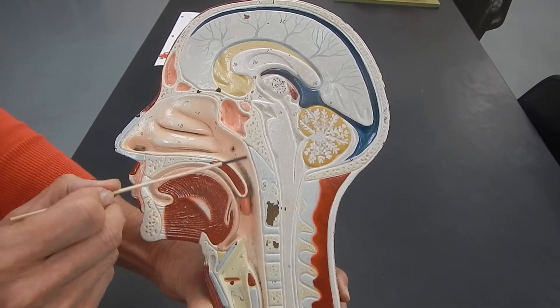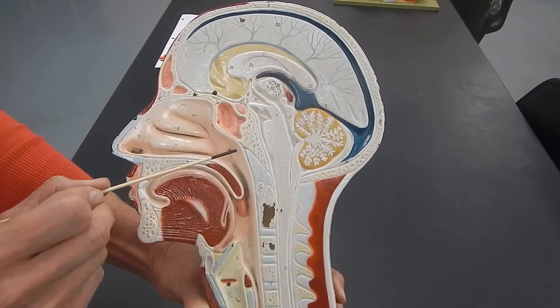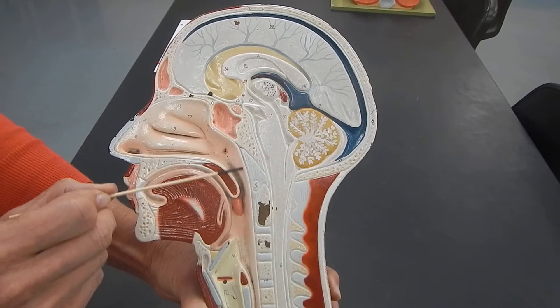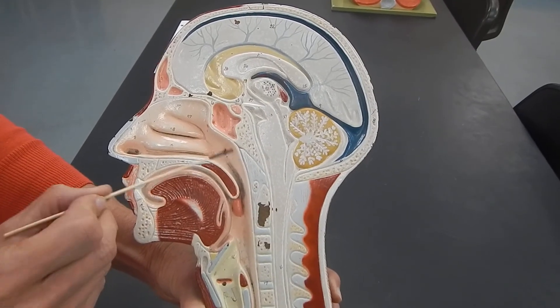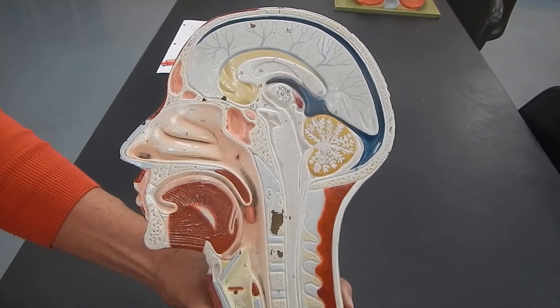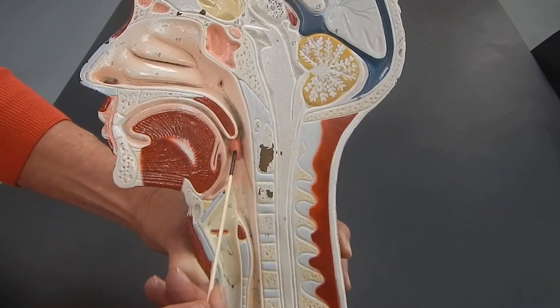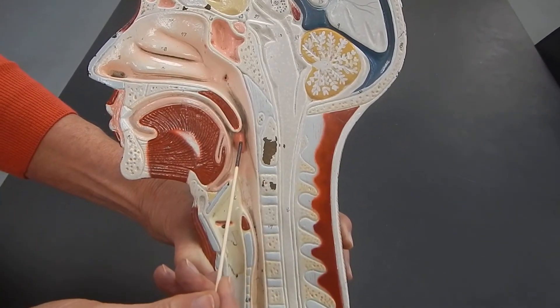In this area, and it's not apparent on this model, there are tonsils that are called pharyngeal tonsils because they're in the pharynx. The tonsils that you think of as your tonsils are these tonsils here, and they're called the palatine tonsils.